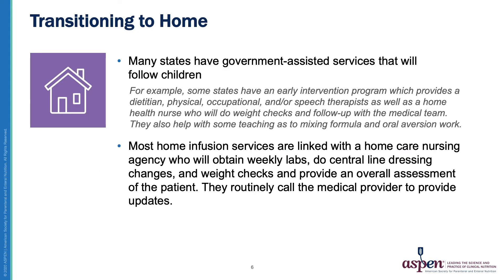Transitioning to home on either of these therapies requires a lot of help from many different people. Many states have government-assisted services that will follow children. For example, some states have early intervention programs which provide a dietitian, physical, occupational, and/or speech therapist, as well as a home health nurse who will do weight checks and follow up with the medical team. They also help with some teaching as to mixing formula and basic oral aversion work. Most home infusion services are also linked with a home care nursing agency who will obtain weekly labs, do central line dressing changes and weight checks, and provide an overall assessment of the patient. They routinely call the medical provider to provide updates.